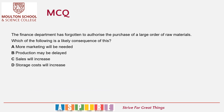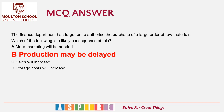The finance department has forgotten to authorise the purchase of a large order of raw materials. Which of the following is not a likely consequence of this? This is a hybrid question between operations and finance, expecting you to link more than one department together. The options are: A: more marketing will be needed; B: production may be delayed; C: sales will increase; or D: storage costs will increase. The answer is B — production may be delayed. If finance haven't authorised the purchase of raw materials, those materials are likely not to be delivered, and if there are no materials to make products, production can't happen.